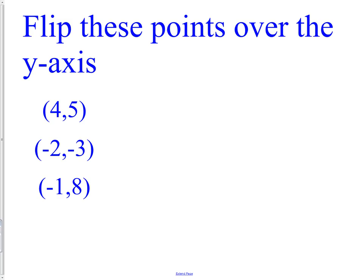Hopefully you remembered, all you needed to do is change your x-coordinate. So instead of being at (4, 5), you're at (-4, 5). Instead of being at (-2, -3), you're at (2, -3). Instead of being at (-1, 8), you're at (1, 8). When we reflect over the y-axis, the y-coordinate does not change. The x-coordinate just changes its sign.